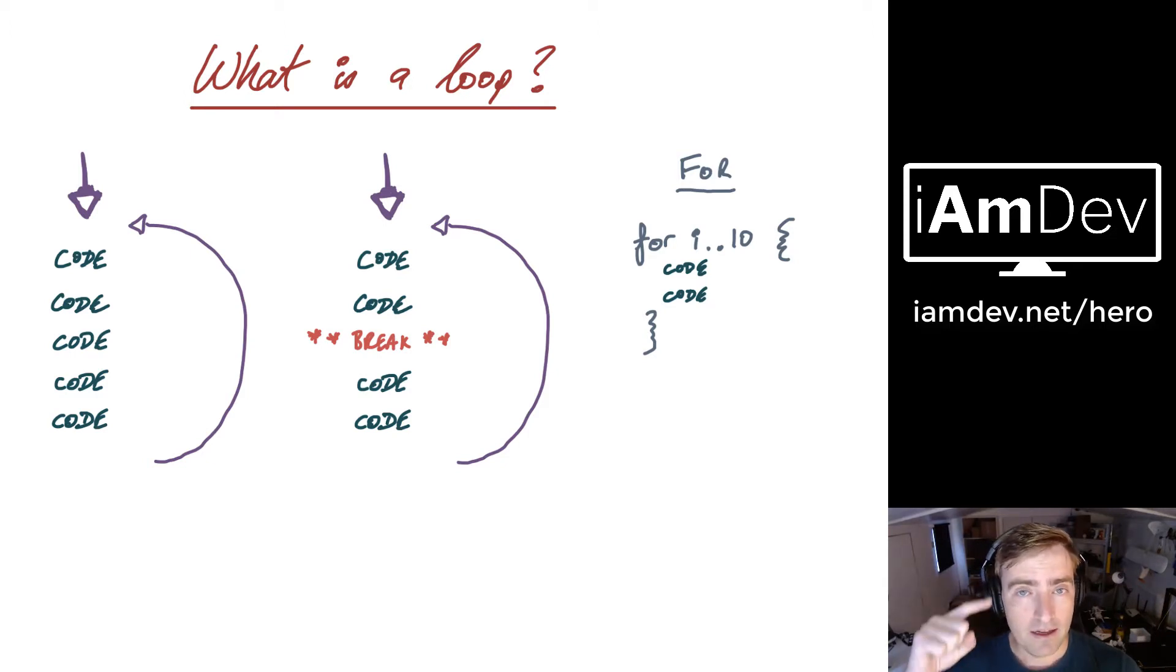So this loop is going to go 0, do the loop, 1, do the loop, 2, do the loop, so on and so on until it goes to 10, do the loop, and then it goes 'ah, we've done this up to the number 10 so I'm going to exit the loop.'